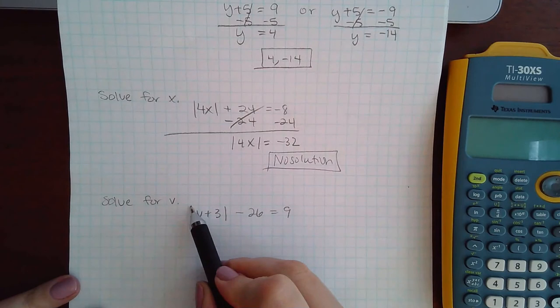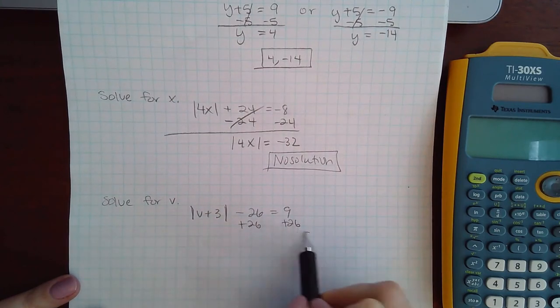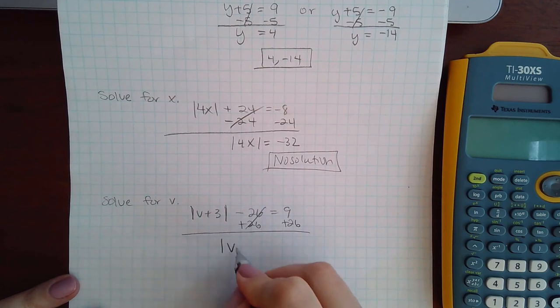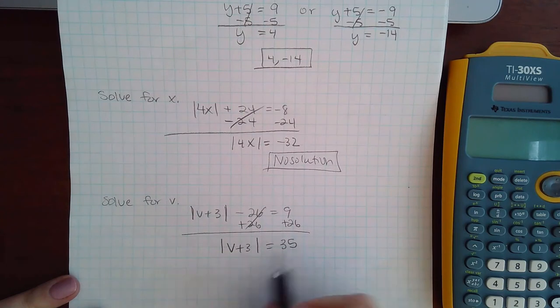And in the last example, in order for me to isolate these absolute value bars, I'm going to have to add 26 to both sides, and I get 35. Then, because it's positive, I have v plus 3 equal to positive 35, or the inside equal to negative 35.